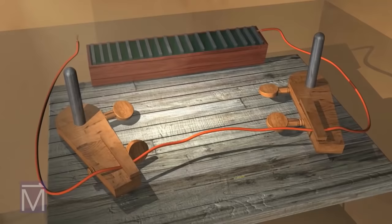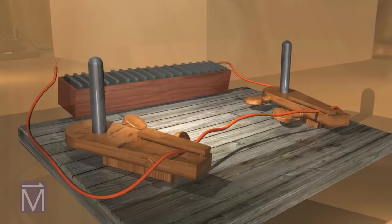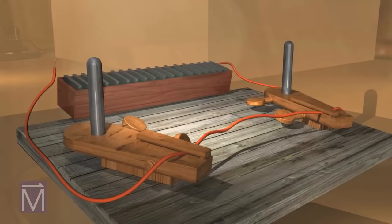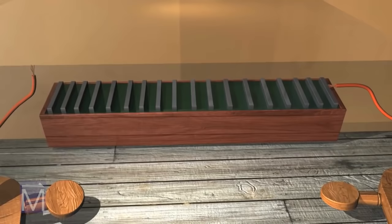In 1820, Danish physicist and chemist Hans Christian Orsted was setting up materials for a lecture. His materials included an early kind of battery called a voltaic pile constructed of copper and zinc plates in a dilute acid solution and a wire held in place here by a set of clamps.